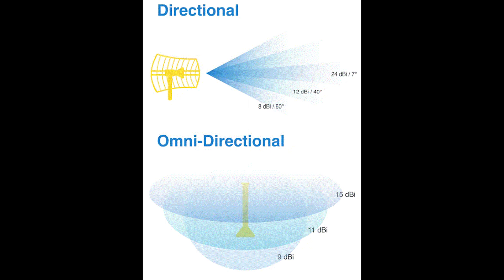When selecting antennas for a particular wireless implementation, you need to determine the type of coverage the antenna uses. In a typical configuration, a wireless antenna can either be omnidirectional or directional, and the one you choose depends on the wireless environment that you want.